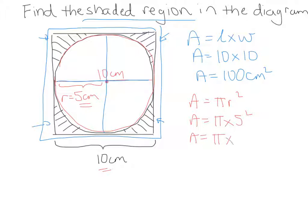5 squared is 25 and pi is equal to 3.14. So 3.14 times 25 is equal to 78.5 centimeters squared.